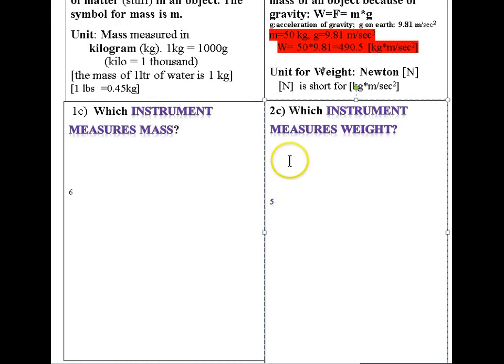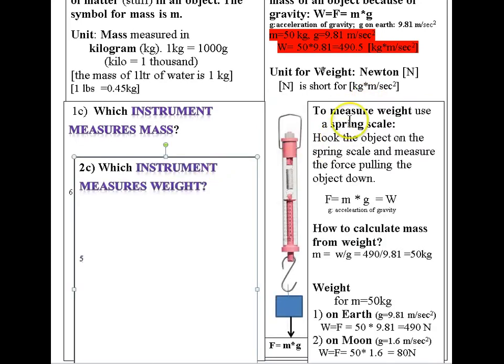Now how should an instrument look like that measures weight? It has to measure the force of how the mass is pulled down and there is a very nice instrument for it that is called the spring scale. What you do is you hook the object on the spring scale and measure the force that is pulling it down.